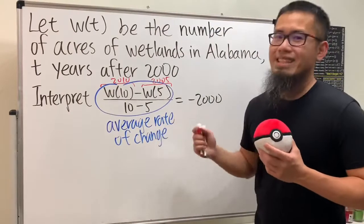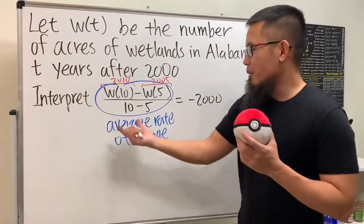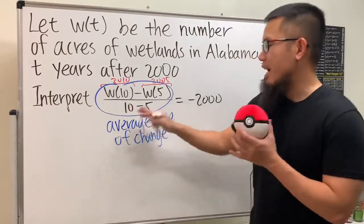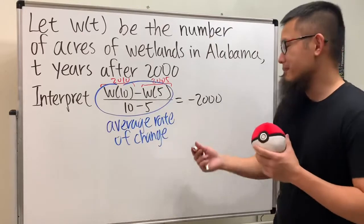So when we interpret this, we should mention the word 'rate.' You can also be a little fancy and say 'on average' as well.